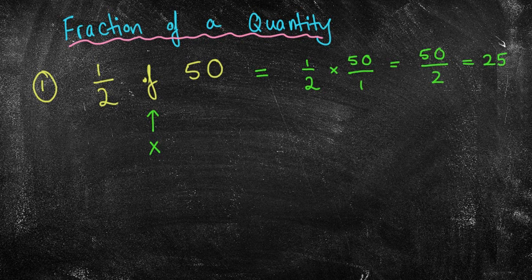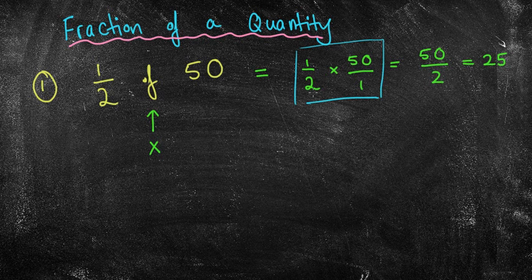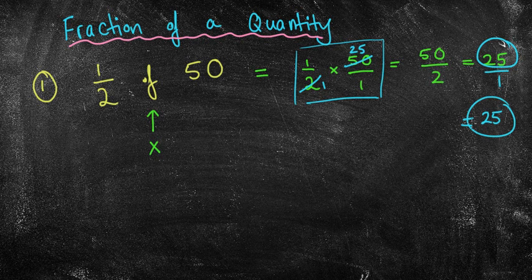Now, you may also do it a slightly different way and actually simplify these numbers at this stage. For example, see how I've got 2 on the bottom and 50 on the top. They're both even numbers. So I could actually say that 2 goes into 2 once and 2 goes into 50 twenty-five times. Therefore, 1 times 25 is 25. 1 times 1 is 1. And 25 over 1 is just 25. Now, if you have larger numbers, sometimes it can be easier to simplify at this point.